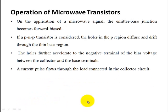The operation of microwave transistors is similar to normal transistors. The emitter-base junction is forward biased and the collector-base junction is reverse biased. In NPN or PNP structures, carriers move from emitter through base to collector, operating in saturation or cutoff regions.